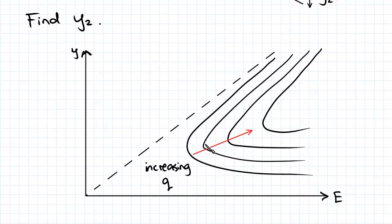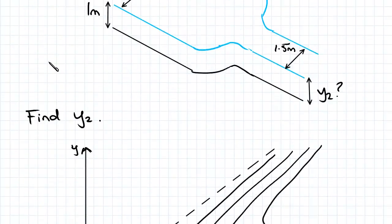And as we increased our q, curves shifted upwards and to the right. So let's see what happens to our flow rate per meter width. Now we were given q equals 3 meters cubed per second.